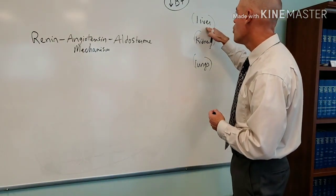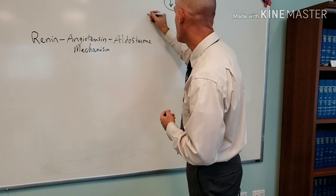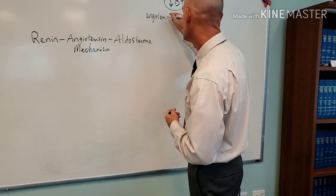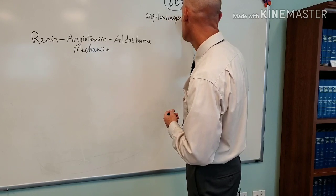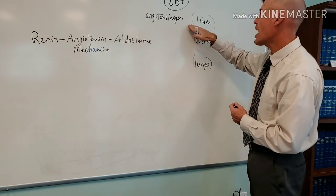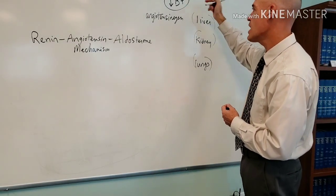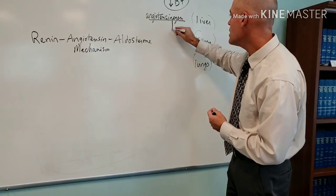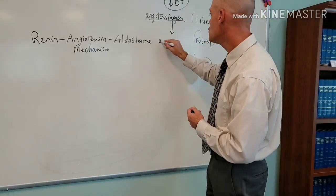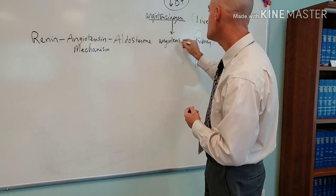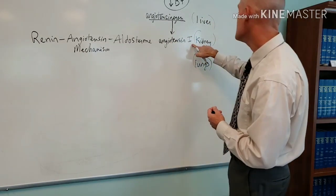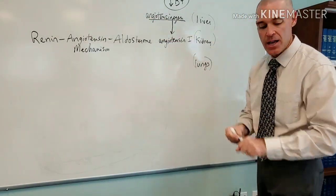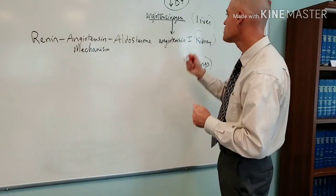So what does the liver make? The liver makes something called angiotensinogen. And what's going to happen is with this drop in blood pressure, angiotensinogen from the liver will be converted to angiotensin-1 in the kidney. Now, an enzyme is going to do that conversion. Our first enzyme that you notice right here is renin.